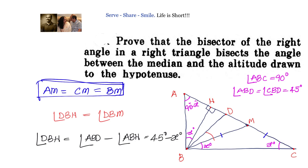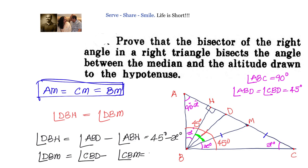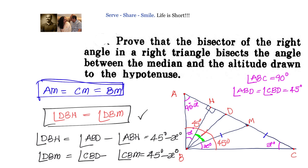We know this total angle is 45 degrees, and similarly this angle on the other side is also 45 degrees. Now angle DBM equals angle CBD minus angle CBM. Angle CBD is 45 degrees and angle CBM is x degrees. So angle DBM also equals 45 minus x. Therefore DBH equals DBM, and that is what we needed to prove.